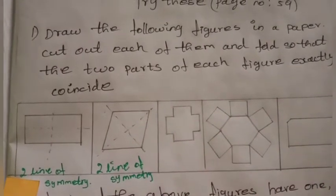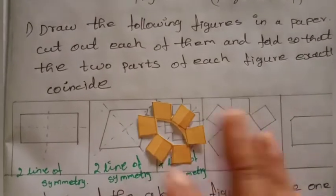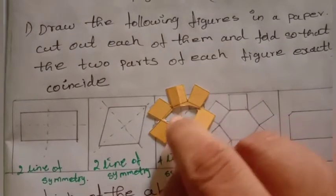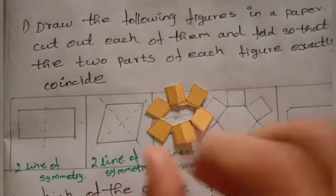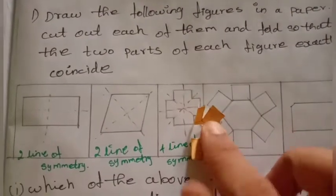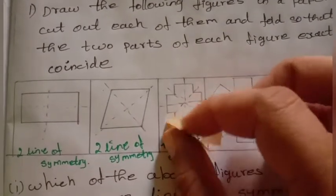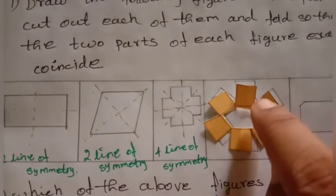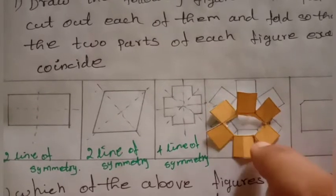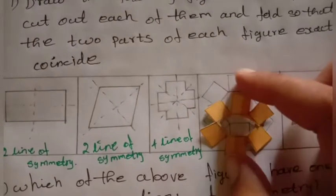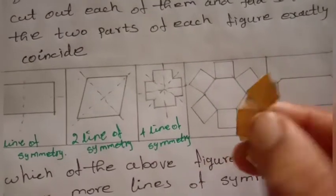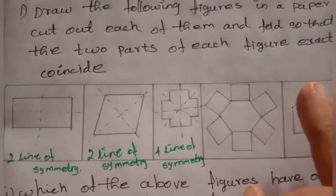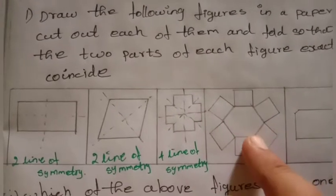We are going to find the center. Therefore, here we have 4 lines of symmetry. Next, we will select the figure. We find the center again. In this figure, we have 2 equal sides on the same side — double side is equal. So we have 6 equal sides on the same side, giving us 6 lines of symmetry.